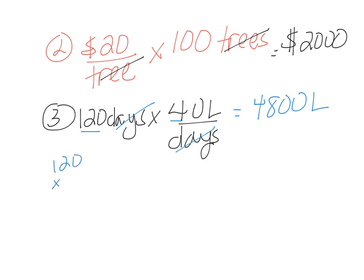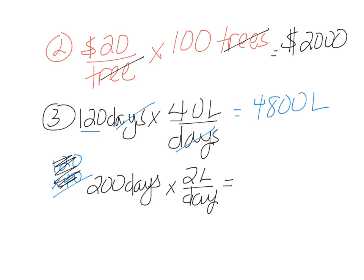So the first part is 4,800 liters. And then we need to calculate the second part. So 200 days times 2 liters per day because they get some rain. And that's going to be 2 times 200. Our days cancel out and that's going to be 400 liters.